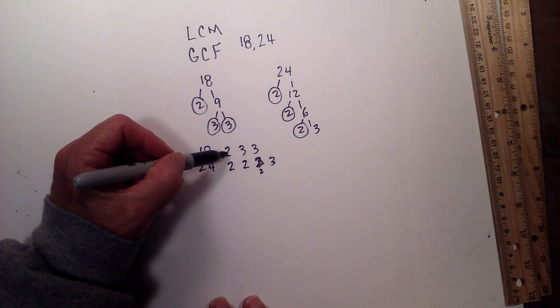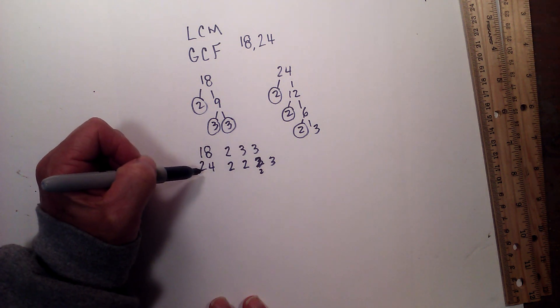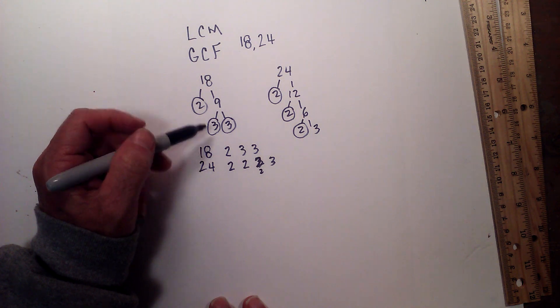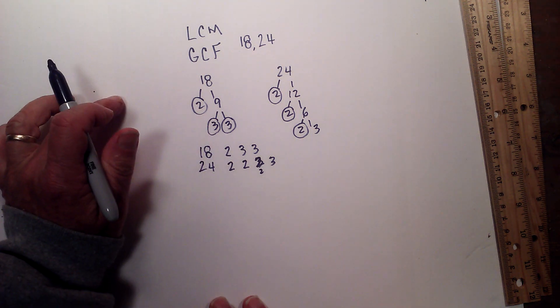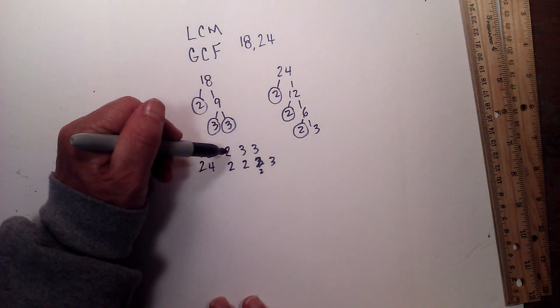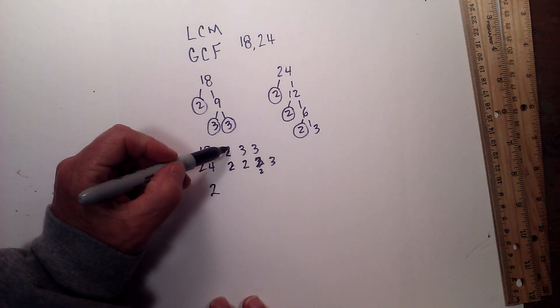However, there is one exception: if they are in both numbers, if both numbers have the same prime number, you only multiply it one time. So here we go, we have 2, and notice I'm only going to multiply it once because it's in both numbers.